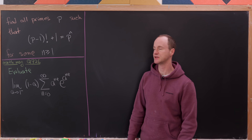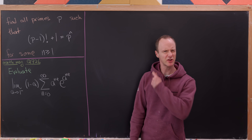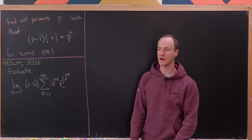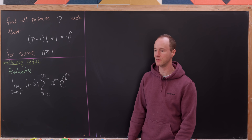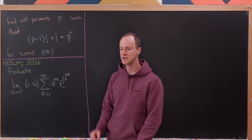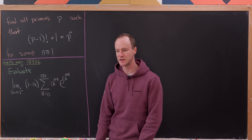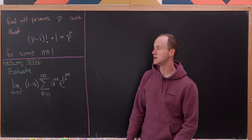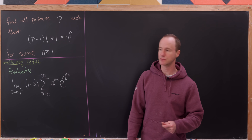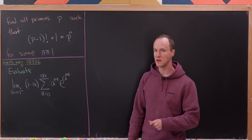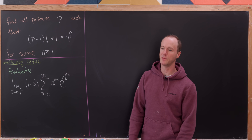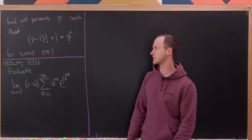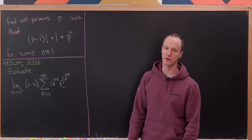Today we're going to look at two pretty interesting problems, starting with what would be a nice homework exercise in an elementary number theory class. Our goal is to determine all primes p such that (p-1)! + 1 is a power of p — in other words, it equals p^n for some n ≥ 1.